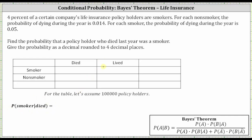Now let's complete the table. To complete the table, we will assume there are 100,000 policyholders so that we have nice values. We know 4% of the insurance policyholders are smokers — 4% of 100,000 is 4,000 — so the total for smokers is 4,000. And then 100,000 minus 4,000 is 96,000, which is the number of non-smokers.